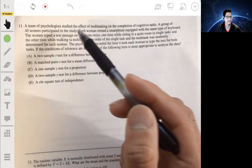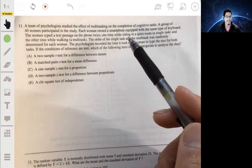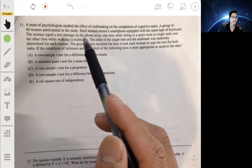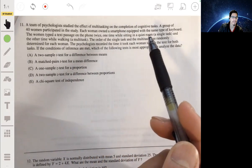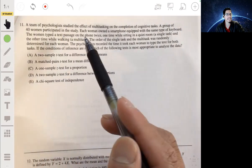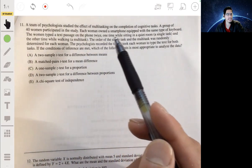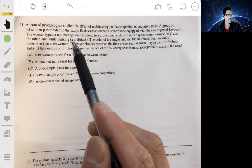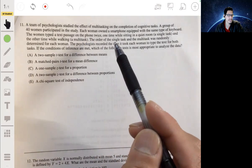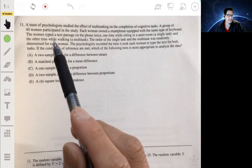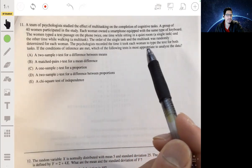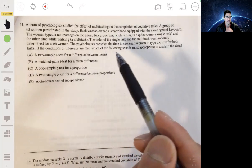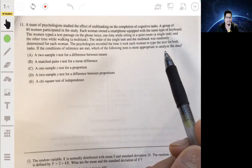Alright, problem 11. We have a team of psychologists that study the effect of multitasking on the completion of cognitive tasks, and a group of 40 women participated in the study. Each woman owned a smartphone equipped with the same type of keyboard, and the woman typed a text message on the phone twice, one time while sitting in a quiet room, a single task, another time while walking, a multitask. The order of the single task and the multitask was randomly determined for each woman. The psychologist recorded the time it took each woman to type the text for both tasks. If the conditions of inference are met, which of the following tests is most appropriate to analyze the data?